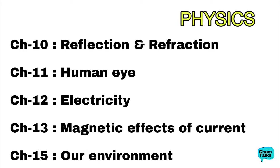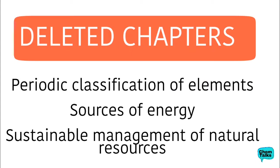Now, which chapters have been completely deleted from the syllabus and not mentioned at all? First, in chemistry — Chapter 5, Periodic Classification of Elements. Next, Chapter 14, Sources of Energy, is also completely deleted. And Chapter 16, Sustainable Management of Natural Resources — these three chapters do not need to be covered at all for this session. I hope the division of topics and subjects is clear.